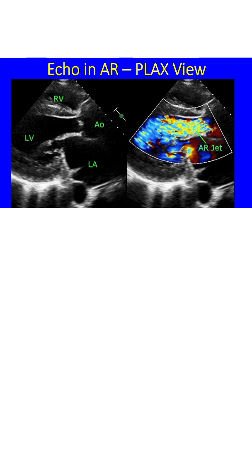Echocardiogram in parasternal long axis view shows dilated left ventricle, left atrium, aorta, and a small portion of the right ventricle, which is usually the outflow region.